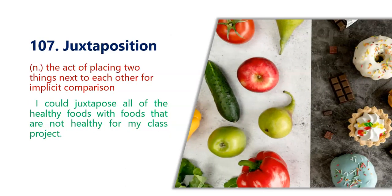The seventh word is juxtaposition — the act of placing two things next to each other for implicit comparison, to place two opposite things next to each other to check for comparison between them. I could juxtapose all of the healthy foods with foods that are not healthy for my class project. In this picture we can see on the left side there are healthy foods like apple or cucumber, and on the right side there is unhealthy food — donuts, chocolates.